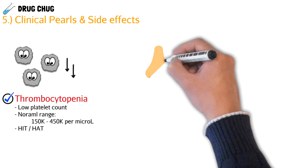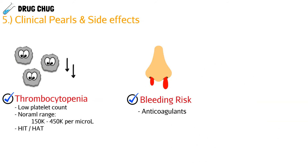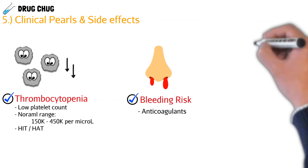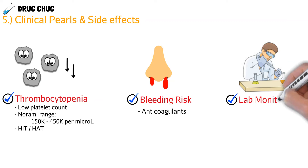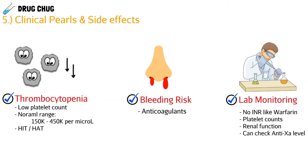The second concern is bleeding risk — all anticoagulants carry this risk because too much can push patients to the bleeding side. For lab monitoring, enoxaparin and daltaparin don't use INR like warfarin does, but we should still check platelet counts, renal function (since both drugs are eliminated through the kidneys), and anti-factor Xa levels to guide any dose adjustments.